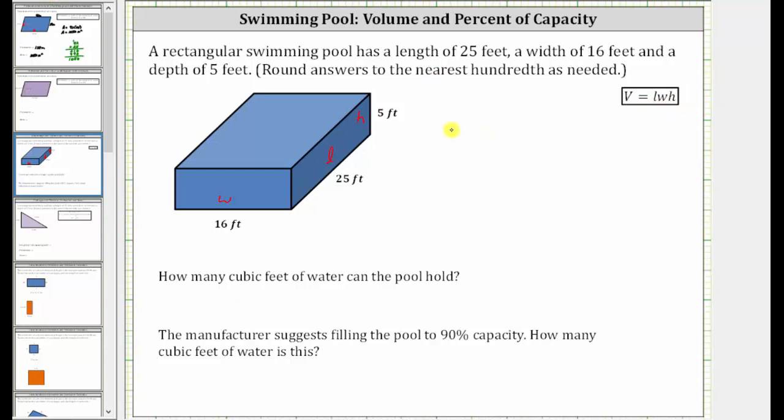So the volume of the pool is equal to 25 feet times 16 feet times five feet. And I'm multiplying from left to right. 25 times 16 is equal to 400.